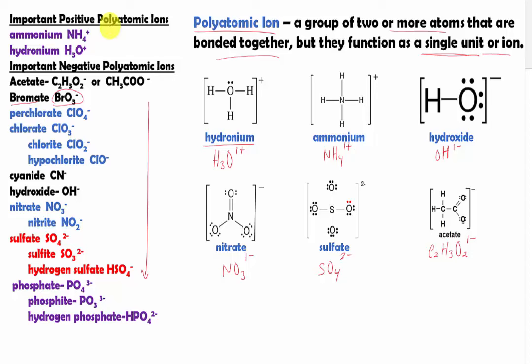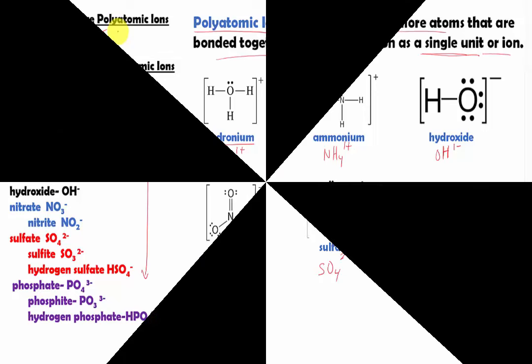Let's go to the list. Here are two common positive polyatomic ions. One of them is ammonium. The second one is hydronium. Those are the only two that are positive, and the rest are all negative ions.